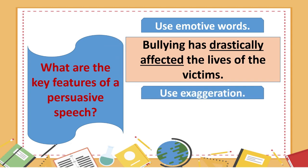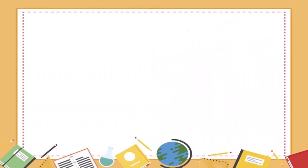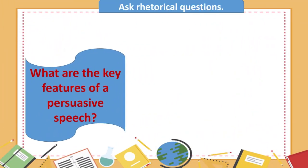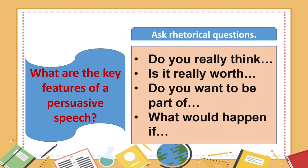Number 6: Use exaggeration. Exaggeration is overstatement to make something seem larger, more important, better, or worse than it really is. For example, the lives of these students have turned upside down. Number 7: Ask rhetorical questions. For example, do you really think that it is worth it? Is it really worth trying? Do you want to be a part of it? What would happen if we will do something about it?